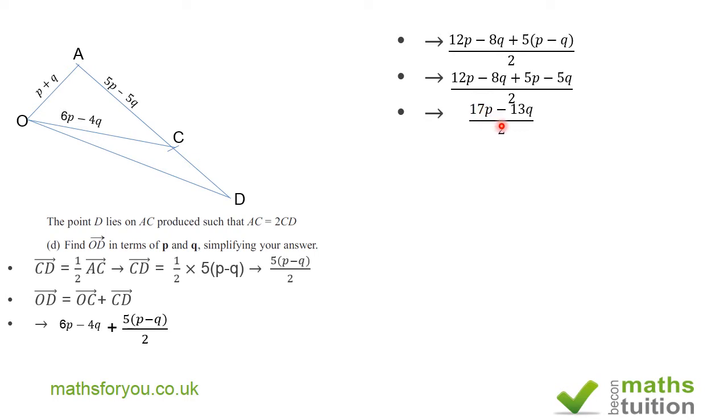And minus 8Q and minus 5Q will give me 13Q, so all of that divided by 2. If we divide 17P by 2 and 13Q by 2, we end up with OD being 8.5P minus 6.5Q. And if you want to tidy this up, you can write OD as a half of (17P minus 13Q).